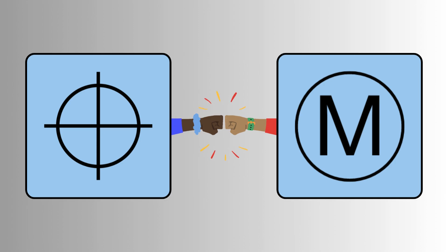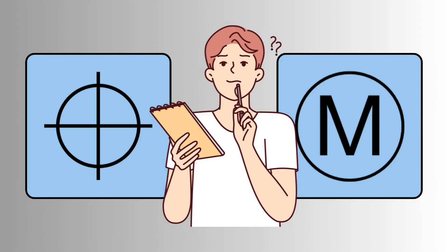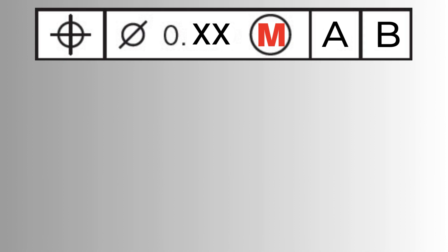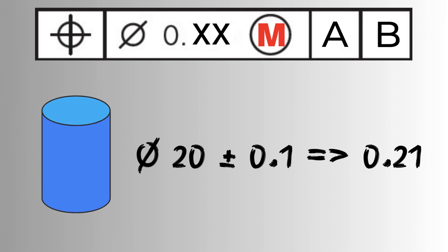However, true position is almost always used alongside maximum material condition, marked by a circled M. Before we go on, let's understand what it means. When added to a position callout, it indicates that the tolerance should be considered when the controlled feature has the maximum amount of material within its dimensional tolerance.